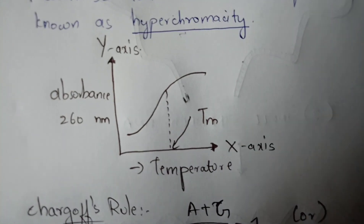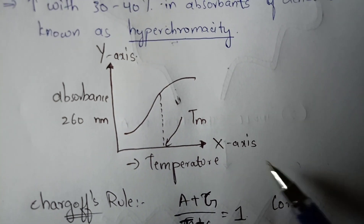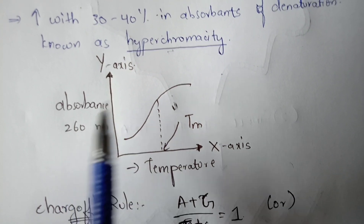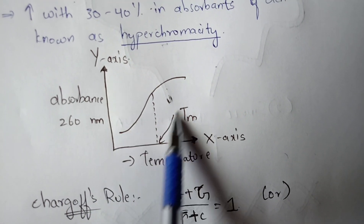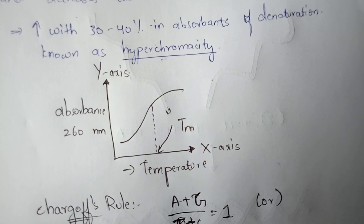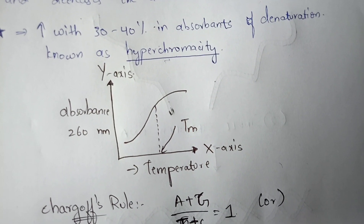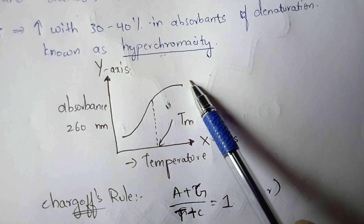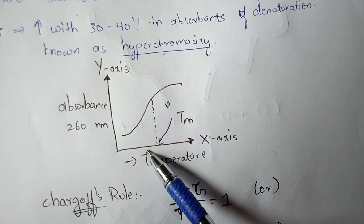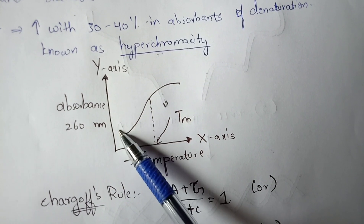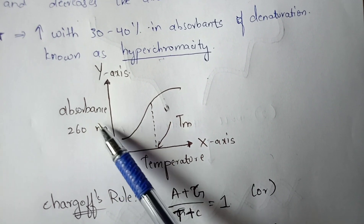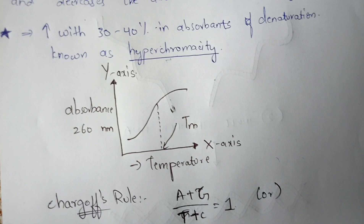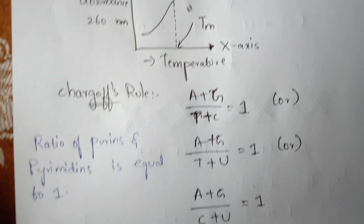This is the graph of melting temperature. The x-axis consists of temperature and the y-axis consists of absorbance value at 260 nanometers — that is the Tm value. This is the Tm curve obtained by plotting experimental values from the laboratory, with scales such as 0.05, 0.10, 0.15, depending on the experimental values.